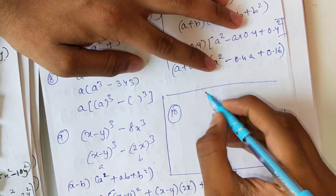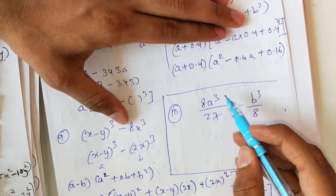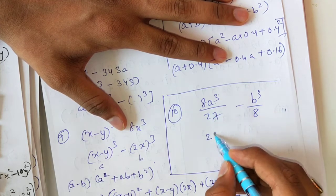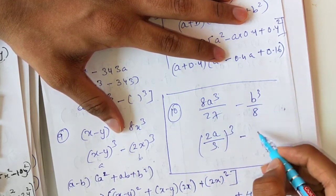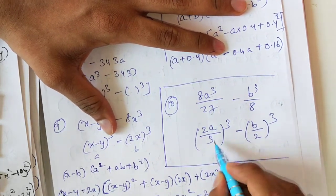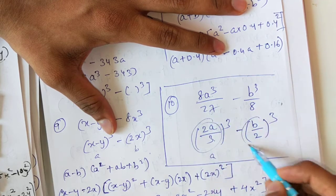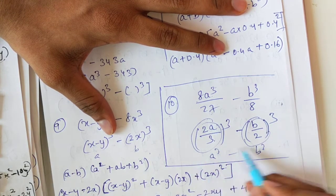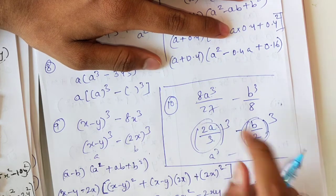Question number 10, you can do on your own. I will do the first step. The question is 8a³/27 - b³/8. The term 8a³/27 can be written as (2a/3)³, since 8 is 2³ and 27 is 3³. And b³/8 can be written as (b/2)³. So we have (2a/3)³ - (b/2)³, which is a³ - b³ form. Apply the a³ - b³ formula, substitute the values, and solve.